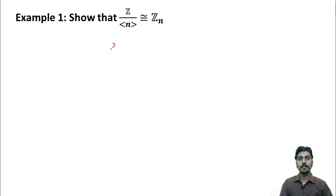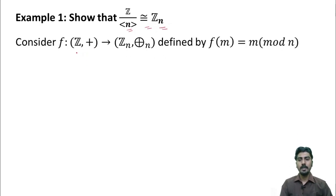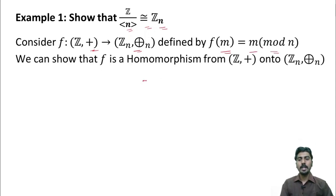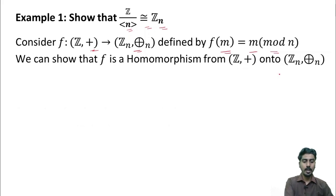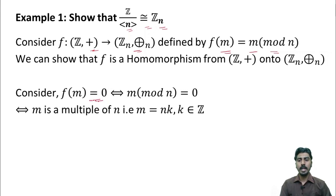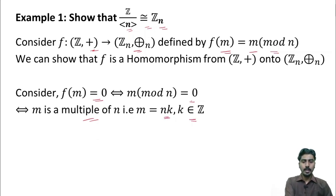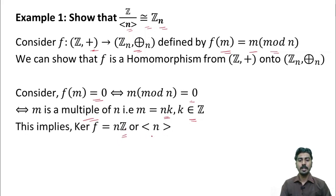Now, let us see an example. Show that Z by the subgroup generated by n is isomorphic to Zn. First, I define a function f from Z plus to Zn under addition modulo n, defined by f of m equal to m modulo n. We can easily show that f is a homomorphism from Z plus onto Zn under addition modulo n. And now, I consider f of m equal to 0. f of m equal to 0 if and only if m modulo n equal to 0. m modulo n is equal to 0 if and only if m is a multiple of n. That is, m is equal to nk where k is an integer. So, the kernel of f is nZ, or the subgroup generated by n.